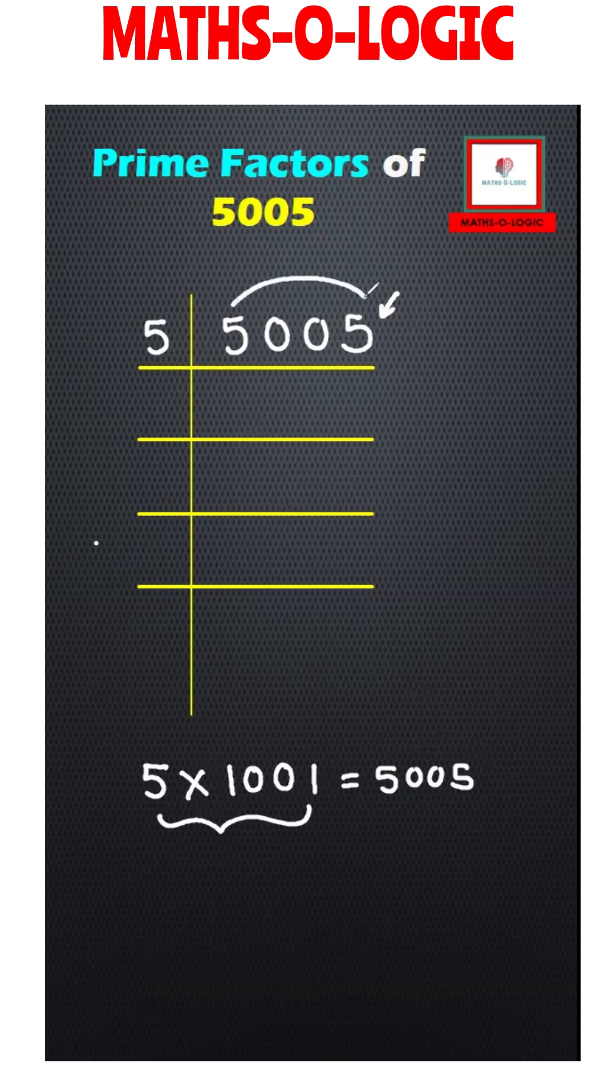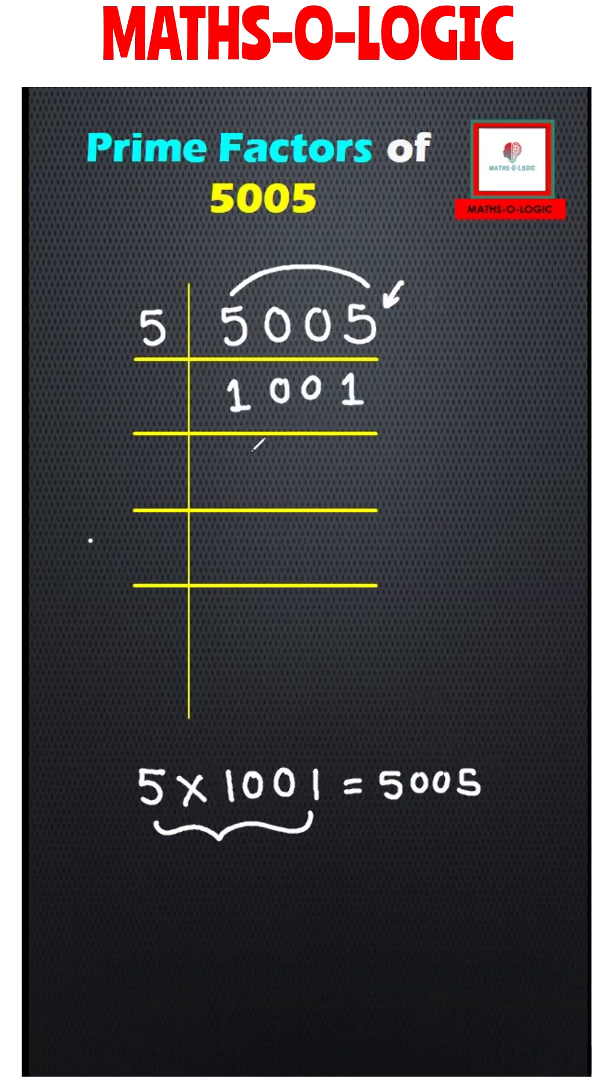Let's divide 5005 by 5 and I get 1001. Now we have to divide 1001. So what am I going to do?